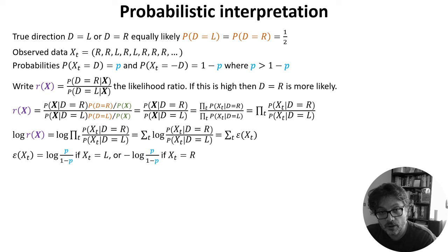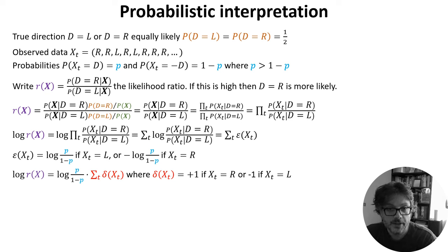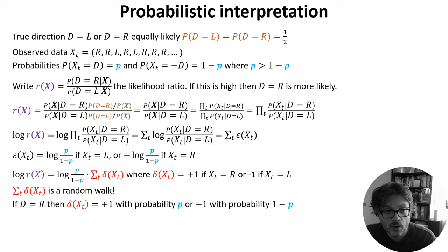This evidence will be equal to log of p over 1 minus p when x_t equals L. If x_t equals R, it's log of 1 minus p over p, but this is just negative the log of p over 1 minus p. With that, we can write the log likelihood ratio as a constant term multiplied by the sum of terms delta(x_t), which are plus 1 if x_t is R and minus 1 if x_t equals L. But this sum is precisely the random walk we saw on the previous slide. When d equals R, the sum increases by 1 with probability p and decreases by 1 with probability 1 minus p, and vice versa if d equals L.